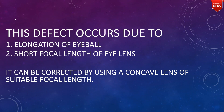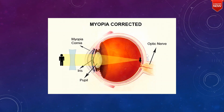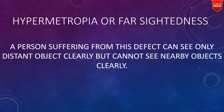Myopia can be corrected by using a concave lens of suitable focal length. The second defect is hypermetropia, or far-sightedness. A person suffering from this defect can see only distant objects clearly but cannot see nearby objects clearly.